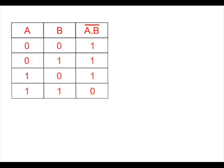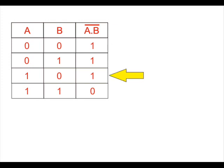The truth table of a NAND gate is shown here. The output is the whole bar of A dot B. When A and B are both 0, the output is 1. When A is 0 and B is 1, the output is 1. When A is 1 and B is 0, the output is 1. When both A and B are 1, the output is 0.